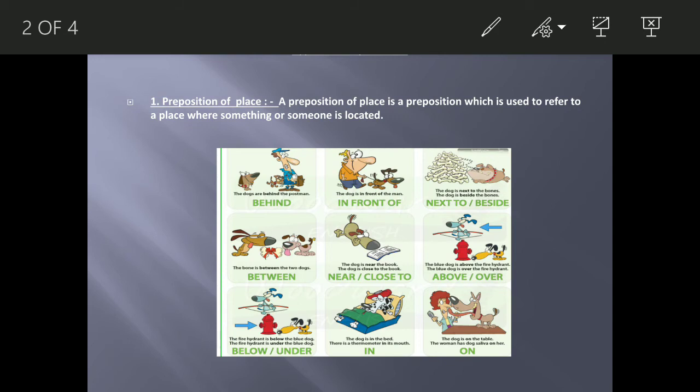Now, we will move on to different types of prepositions. The first one is preposition of place. A preposition of place is a preposition which is used to refer to a place where something or someone is located.